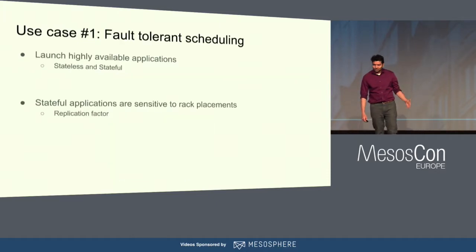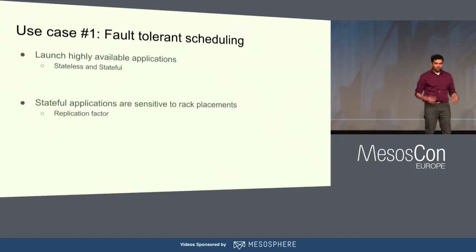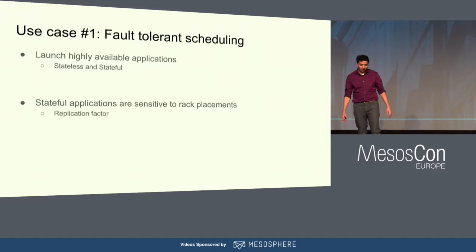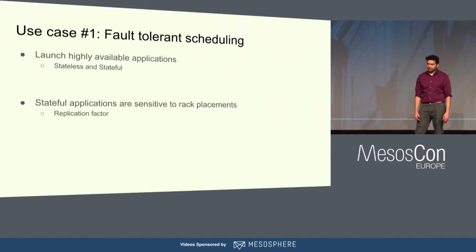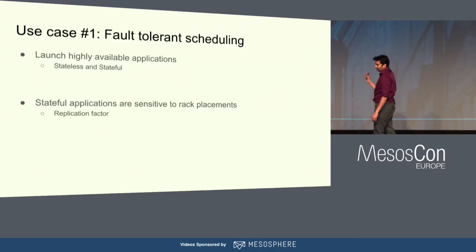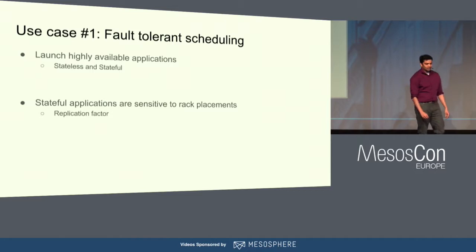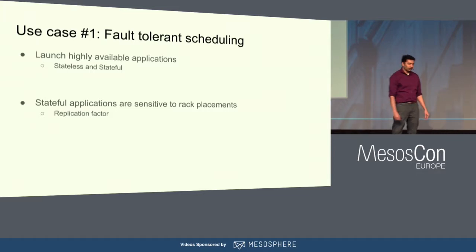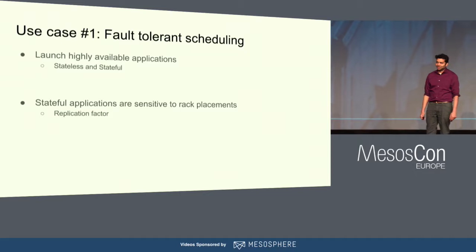What are some of the use cases for fault domains? The first is the ability to do fault-tolerant scheduling, which is really important if you want to launch highly available applications. Most microservice applications today have many instances for load balancing, and you want to make sure they're spread over a wide fault domain so they can tolerate an AWS zone going down or a rack going down. This is important for both stateless and stateful applications — for stateful apps, replication means you want instances sharded nicely across fault domains so replication doesn't cause problems from bad scheduling decisions.